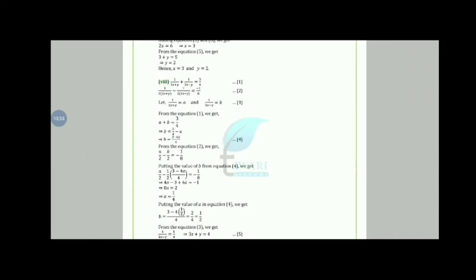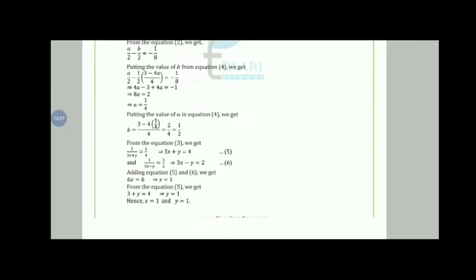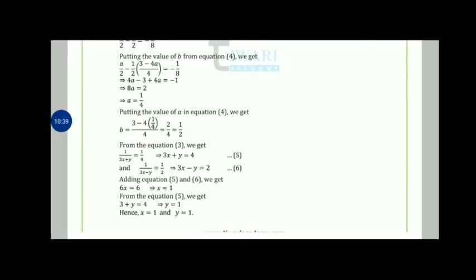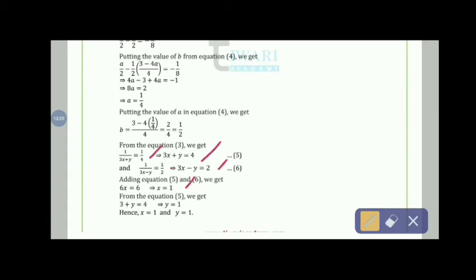Putting a = 1/4 into equation 4: b = (3 − 4(1/4))/4 = 2/4 = 1/2. Since 1/(3x+y) = 1/4, we get 3x + y = 4. Since 1/(3x−y) = 1/2, we get 3x − y = 2. Adding: 6x = 6, so x = 1. From 3(1) + y = 4, y = 1. Therefore x = 1 and y = 1.